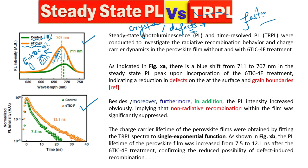The steady state PL and the time-resolved PL were conducted — it is important to write in the past tense because you did this in the past. In the results and discussion, you can use words like 'to investigate,' 'explore,' 'to study,' 'to reveal.' You can write about the radiative or non-radiative recombination behavior, or carrier dynamics in the perovskite film — the pristine one versus the treated one.